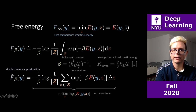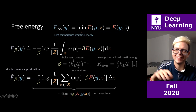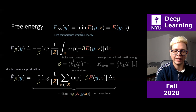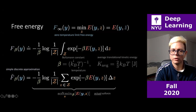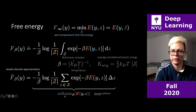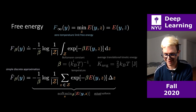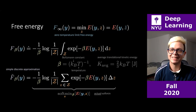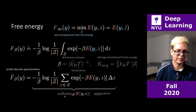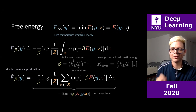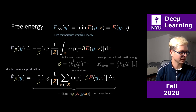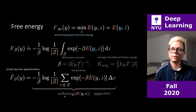The zero temperature (super cold) free energy is simply the min, whereas if we relax by increasing the temperature, we get this soft mean — the log of the sum of exponentials. I call this the 'actual soft mean.' Most people outside this class call it something else, which I'll clarify in a few slides.